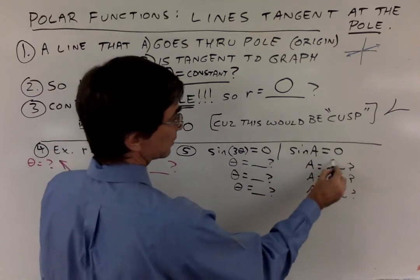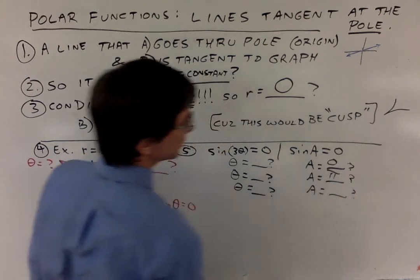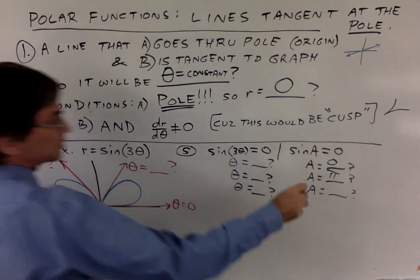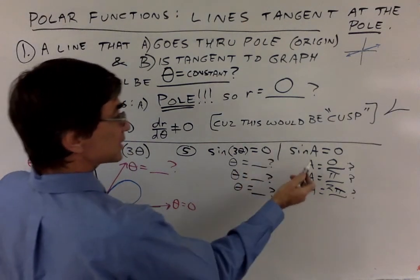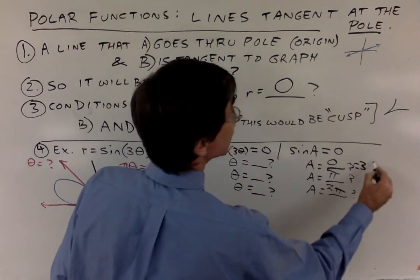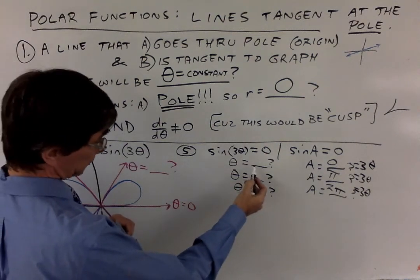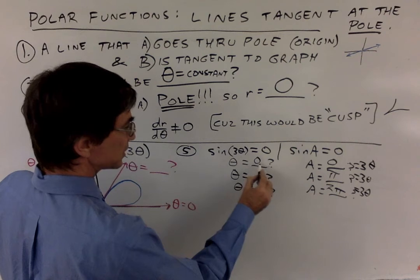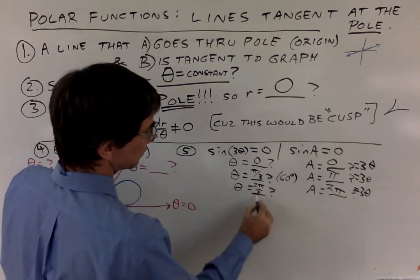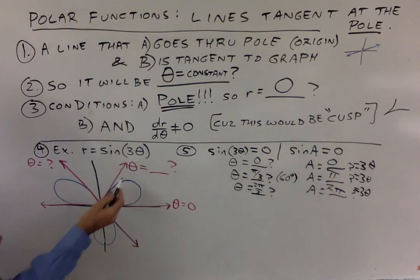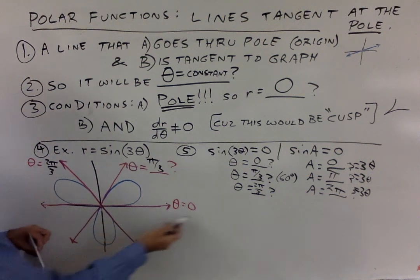Sine equals zero when the angle equals zero, then at pi — since on the unit circle it's the y-coordinate — and then two pi. There are infinitely many answers, but these are the simplest ones. Since three theta equals a, we solve each: three theta equals zero gives theta equals zero; three theta equals pi gives theta equals pi over three, which is 60 degrees; and three theta equals two pi gives theta equals two pi over three. So the three tangent lines are theta equals zero, theta equals pi over three, and theta equals two pi over three.